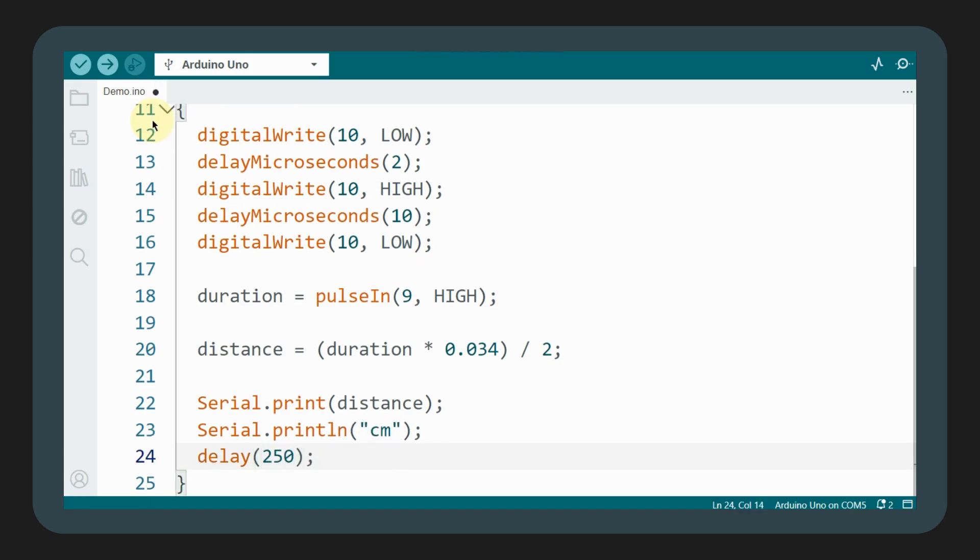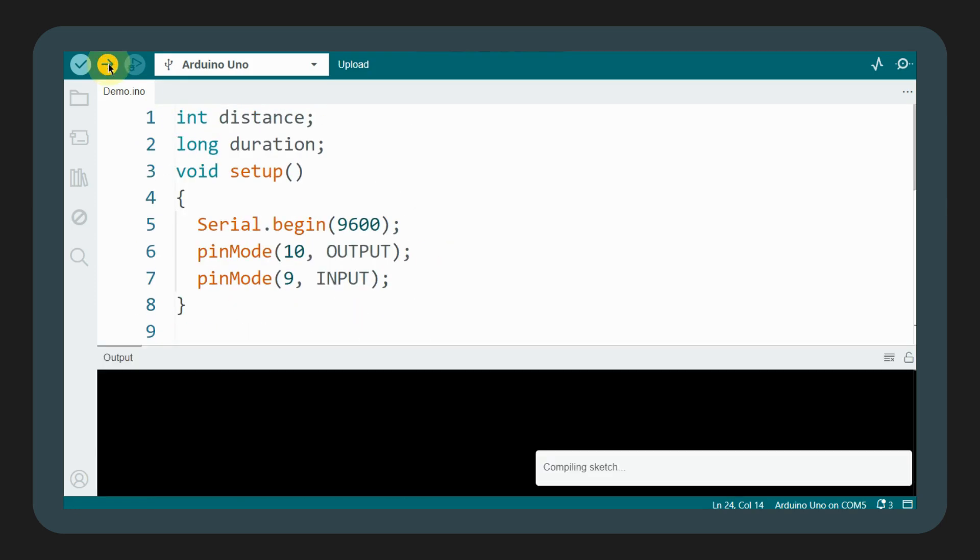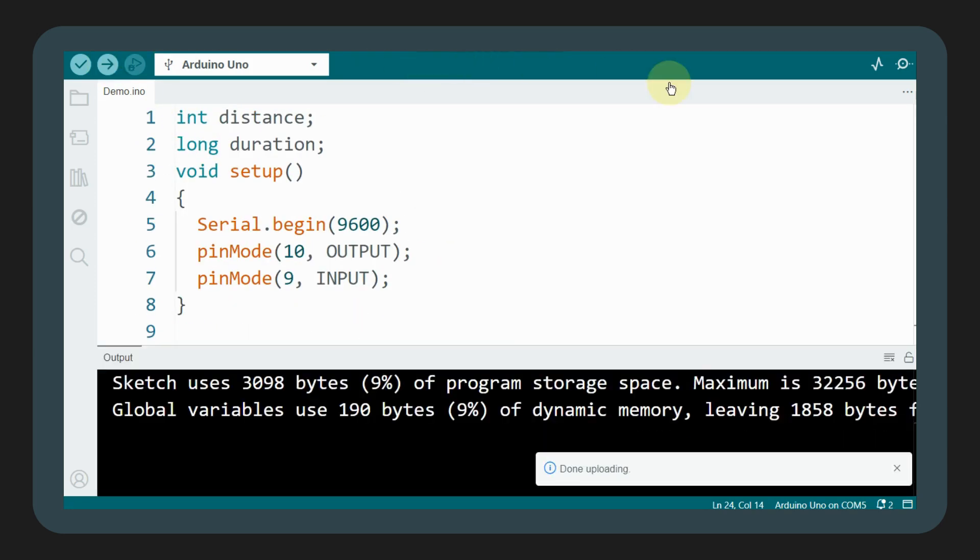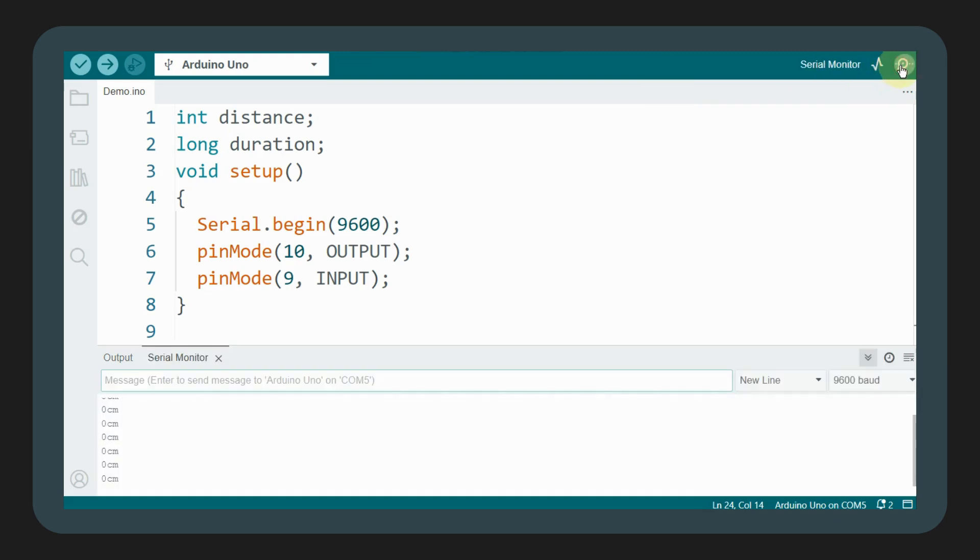Finally, we display the distance in centimeters on the serial monitor and upload the code to our Arduino. After successfully uploading the code, we open the serial monitor.